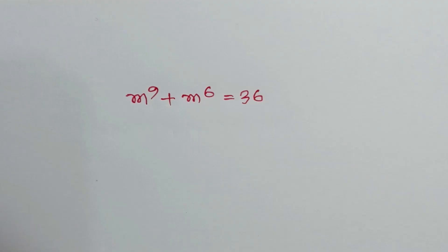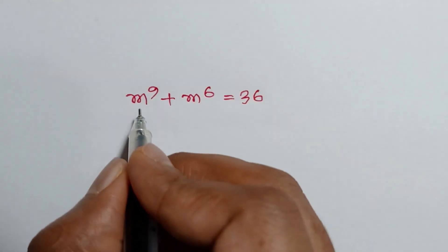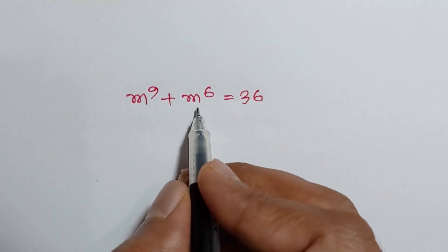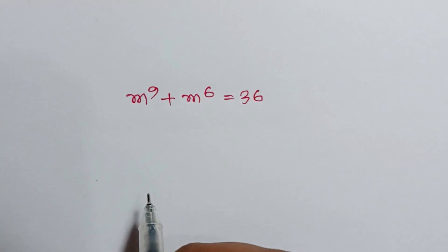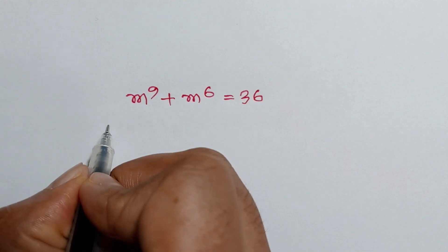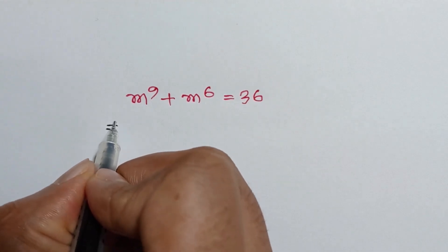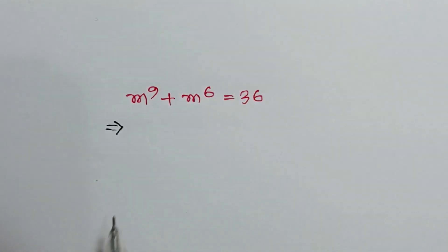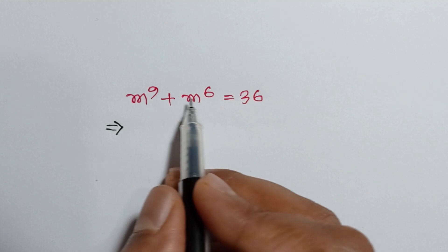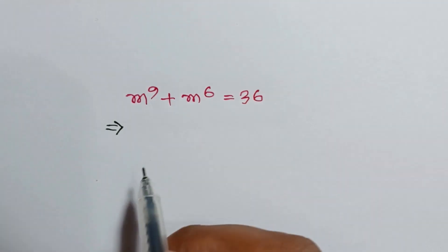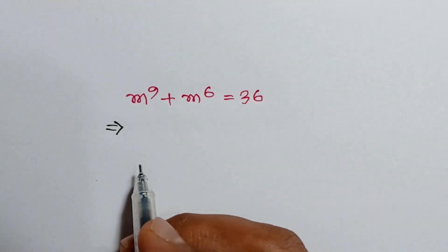Hi everyone. I am going to show how to solve m to the power 9 plus m to the power 6 is equal to 36. Here, 9 can be broken as 3 times 3, and 6 can be broken as 3 times 2.